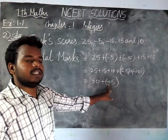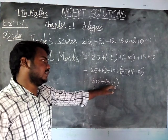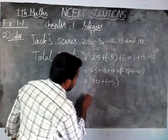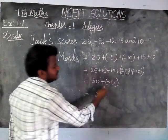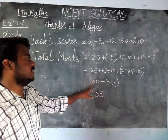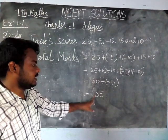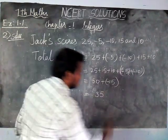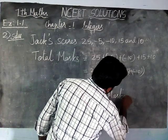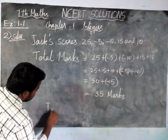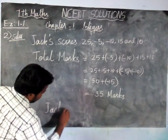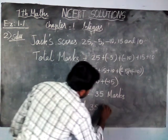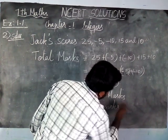One is a positive number and another one is a negative number, so we are finding the difference. The difference between 50 and 15 is equal to 35. The greatest number is 50, so the sign is plus. Therefore, Jack scored 35 marks on the quiz.